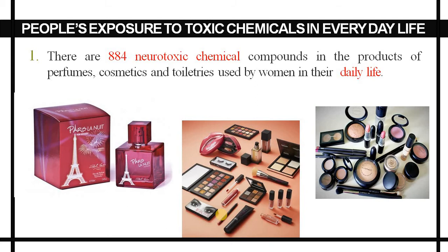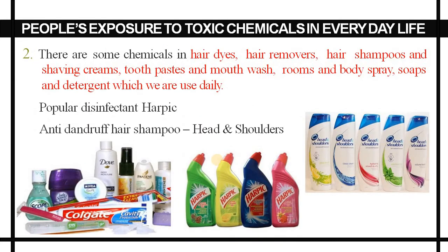There are 884 neurotoxic chemical compounds in products such as perfumes, cosmetics, and toiletries used in daily life. Additionally, chemicals are found in hair dryers, hair removers, shampoos, shaving cream, toothpaste, mouthwash, room and body sprays, soaps, and detergents — all products used in our daily life.